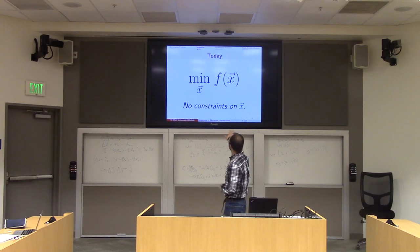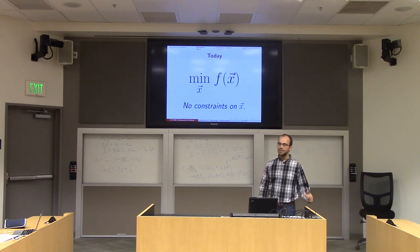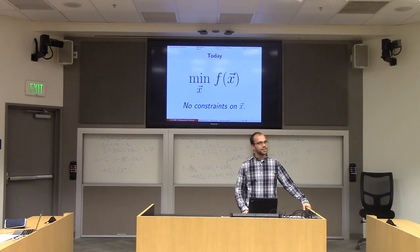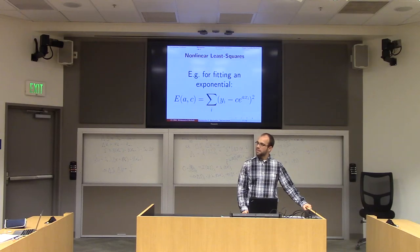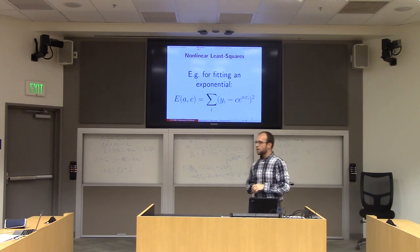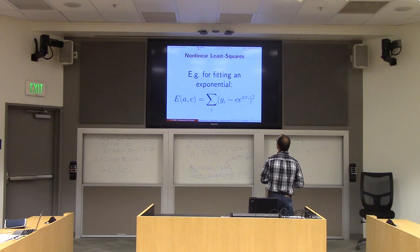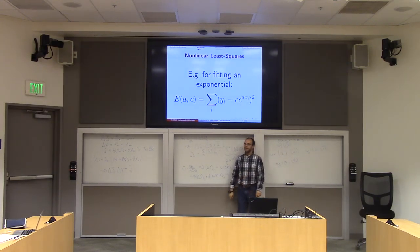Today we worry about minimizing f(x) with respect to x without any constraints — a very classical problem. One example is nonlinear regression: say I want to model data as f(x) = c·e^{ax} but don't know c or a. I have many (x, y) data pairs, so I can't recover c and a exactly. Being variational calculus experts, we write down an energy in terms of the unknowns a and c.